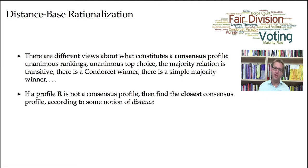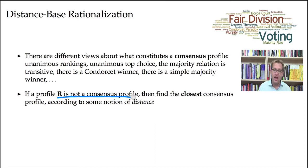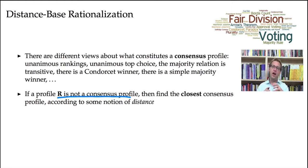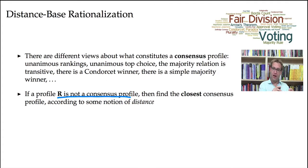The idea is that if you're given a profile that is not a consensus profile — once you fix your notion of a consensus profile — you should look at the space of all possible profiles. Some of those profiles have been identified as consensus profiles. Starting from the profile you're given, go out and try to find the closest consensus profile to the one you're given. Once you find that closest consensus profile, then typically it's obvious who the winner should be, and that should be the winner of the election.